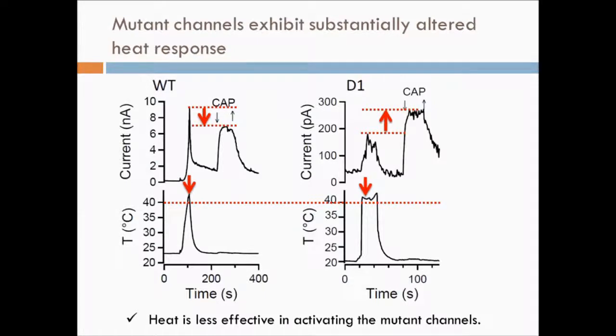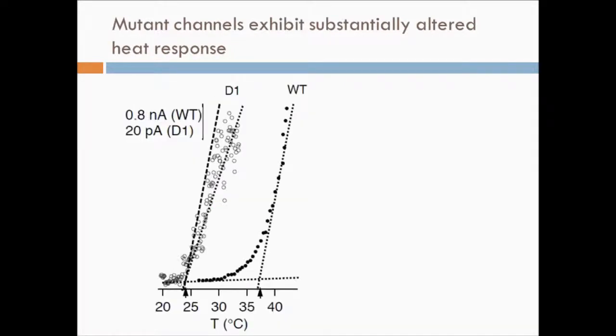The reduced heat response was not a result of slow gating kinetics, because lengthening the heat pulse did not yield any increase in the current amplitude. Second, using an amplitude-independent analysis, we found that the activation threshold temperature was significantly shifted to the left in D1 mutant, as well as the turret replacement mutants.